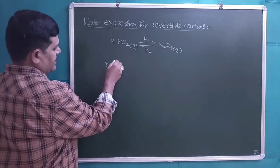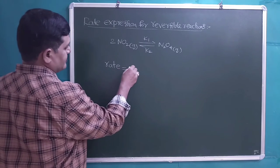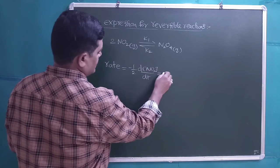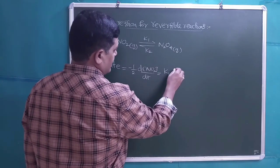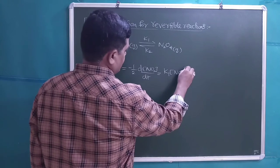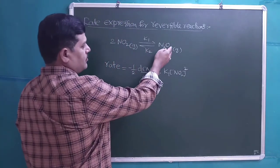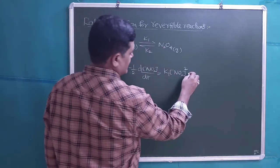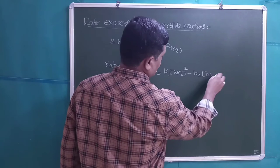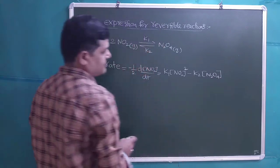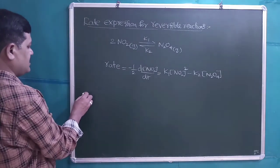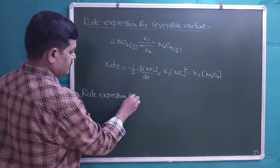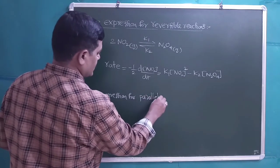For the given equation, the rate expression is: rate = −(1/2) d[NO₂]/dt = K1[NO₂]² − K2[N₂O₄]. At the same time, N₂O₄ is converting back into NO₂, so for the backward reaction N₂O₄ is the reactant, giving the term −K2[N₂O₄]. This is the rate expression for the given reversible reaction.